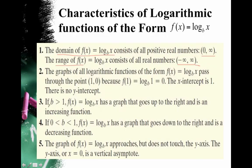Here in 3, if b is greater than 1, then our function has a graph that goes up to the right and is increasing. Whereas if we get a fraction, then the graph goes down to the right and is decreasing. Again, it's just reversed from what we saw with the exponentials.